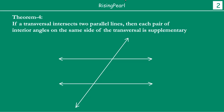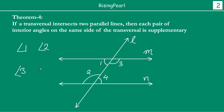Now we are going to get into the proof of this particular theorem. We have drawn our parallel lines. This is our line M, this is the line N, and this is our line L which is the transversal. These are our interior angles — angle one and angle two are on the same side. Similarly angle three and angle four are on the same side.